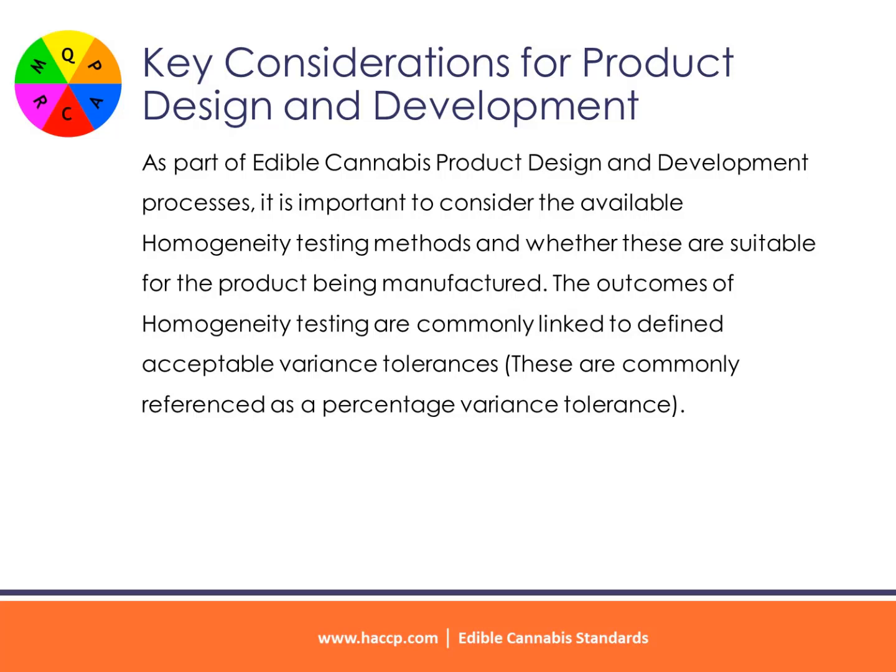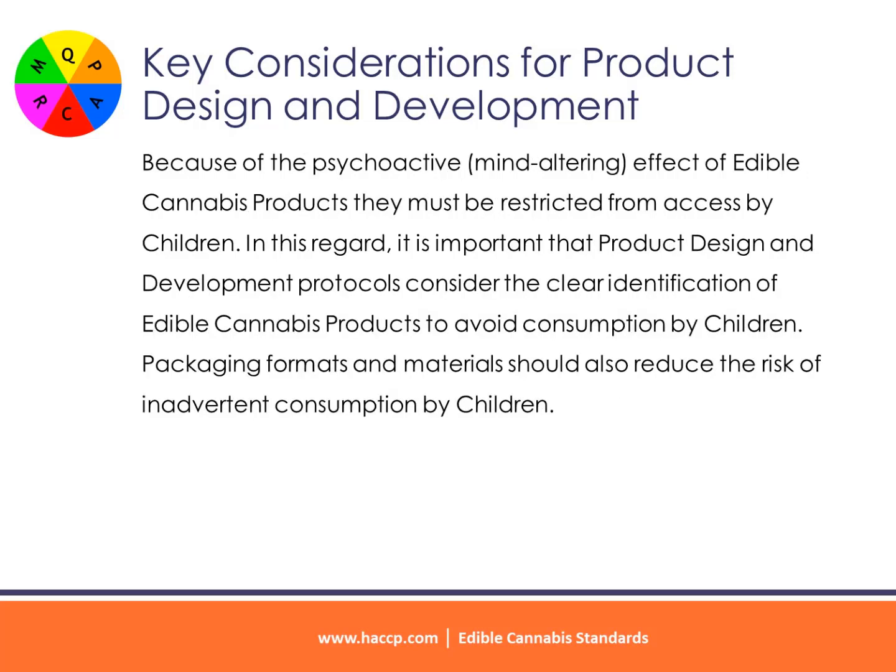As part of edible cannabis product design and development processes, it is important to consider the available homogeneity testing methods and whether these are suitable for the product being manufactured. The outcomes of homogeneity testing are commonly linked to defined acceptable variance tolerances, commonly referenced as a percentage variance tolerance. Because of the psychoactive, mind-altering effect of edible cannabis products, they must be restricted from access by children.